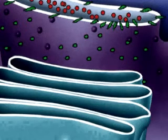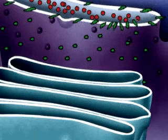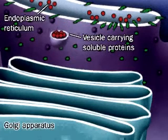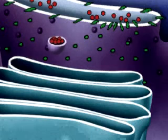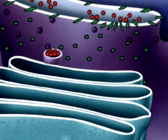Vesicles bud from the ER and move toward the Golgi cis face. This vesicle is carrying soluble proteins, proteins not associated with the membrane. The vesicle fuses with the Golgi apparatus, delivering the proteins to the Golgi lumen.